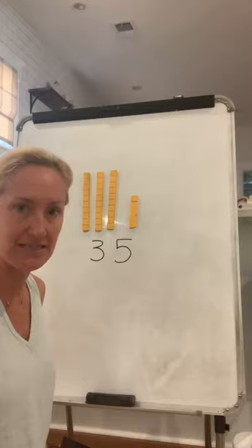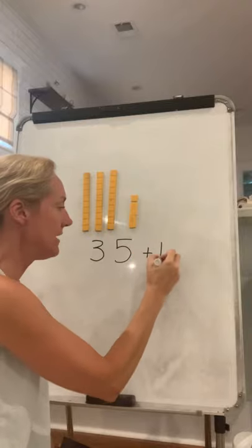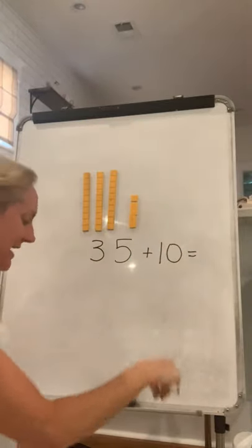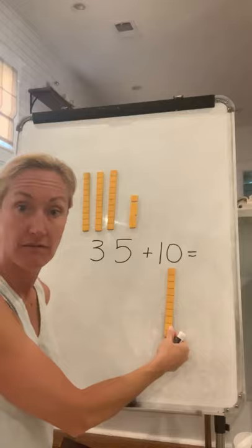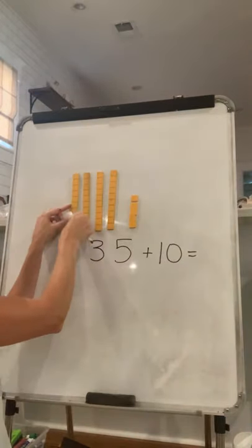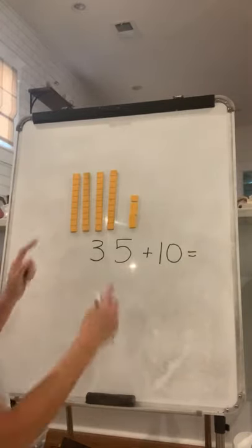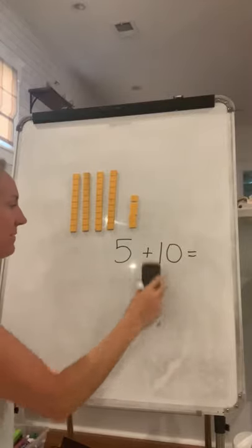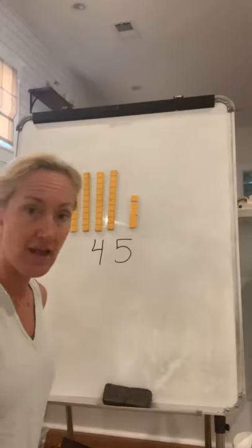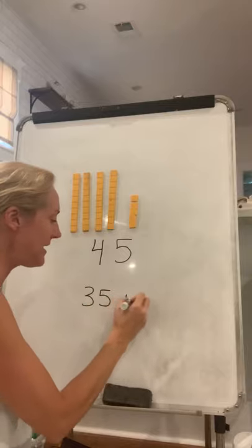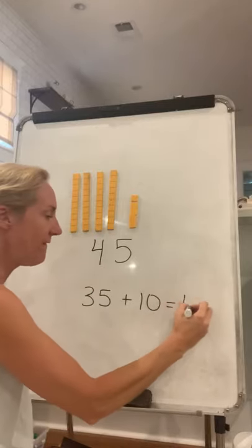Now I want to change the tens. What if I want to add 10 more? 35 plus 10. I'm not going to add a one — I said plus 10. I'm going to add a 10, one ten, and put it over here with the tens. How many tens do I have now? 1, 2, 3, 4. I added one more, so it's going to be 45. So 35 plus 10 — we're going to change the tens and it's plus, so it's going to get bigger. 35 plus 10 equals 45.